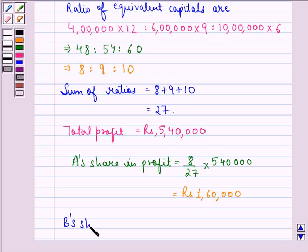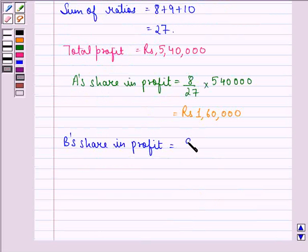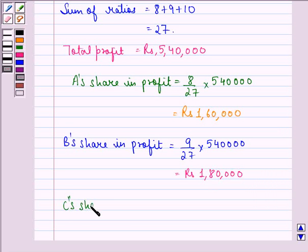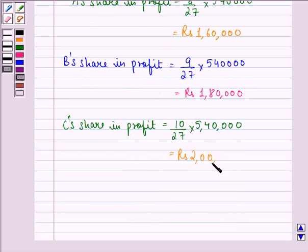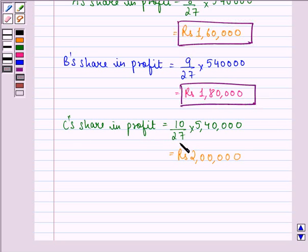B's share in profit is Rs. 1 lakh 80,000 and C's share is Rs. 2 lakhs. So our answer to this question is that A's share in profit is Rs. 1 lakh 60,000, B's share is Rs. 1 lakh 80,000 and C's share is Rs. 2 lakh.